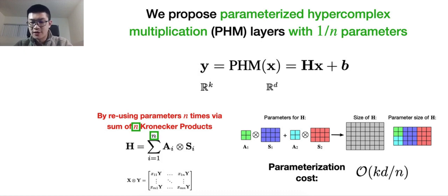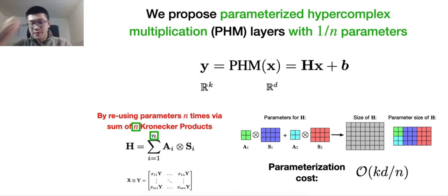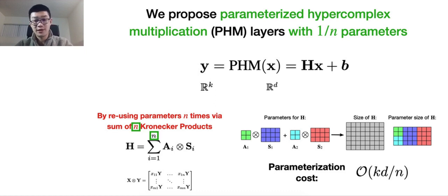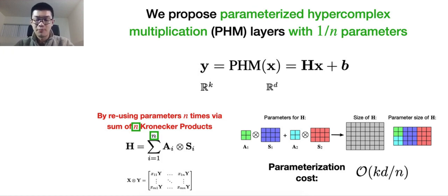As illustrated on the right-hand side, although the constructed matrix H can be of a bigger size, the actual learnable parameter size of matrix H can be much smaller than the size of H. Mathematically, the parameterization cost of the PHM layer is on the order of KD over n. The hyperparameter n is specified by the user, so if you use more Kronecker products in the sum, you end up with more parameter saving by replacing the FC layer with PHM layers.